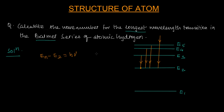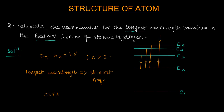We know the relationship that En minus E2 equals hν, where n is strictly greater than 2. Now they want the longest wavelength. The longest wavelength corresponds to the shortest frequency, because c equals νλ, so ν equals c over λ — if λ is the longest, ν has to be the shortest.